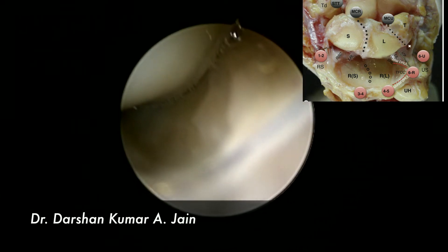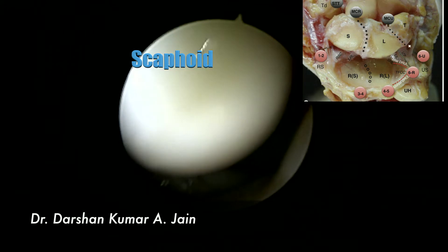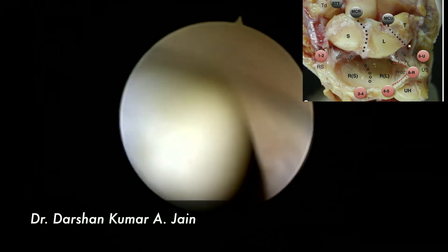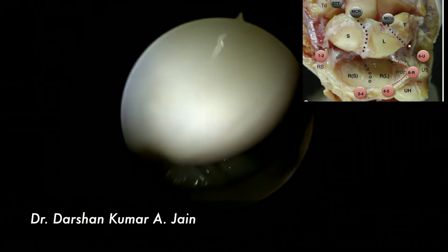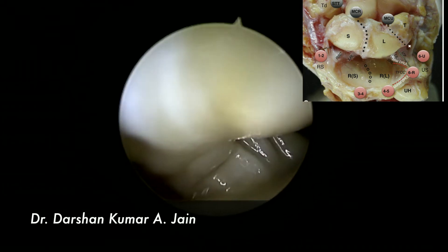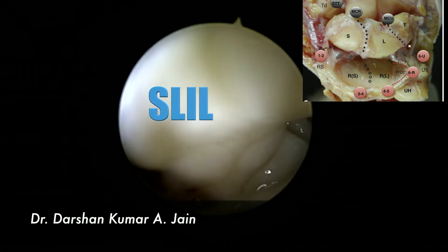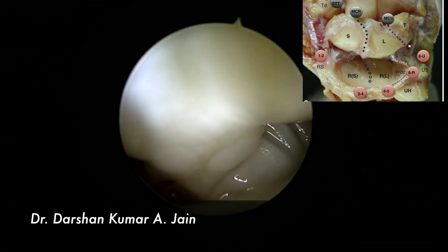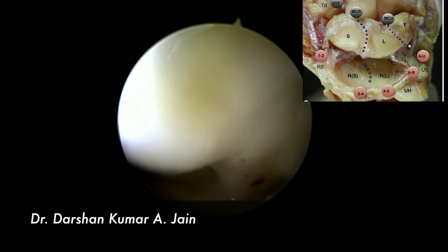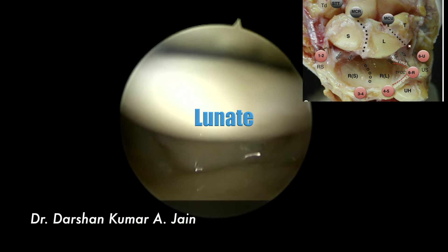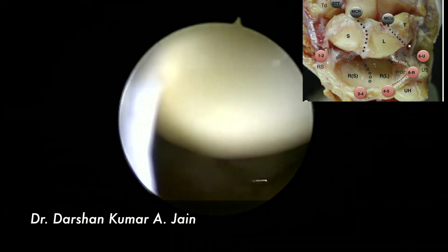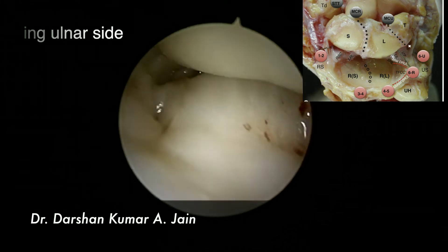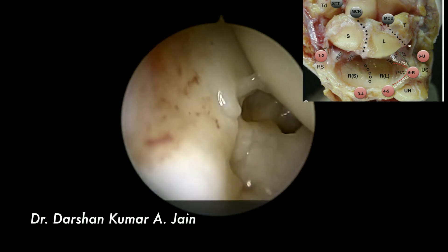You can see the proximal pole of the scaphoid, tracing towards the radial side further. That's the scaphoid-lunate interosseous ligament on the ulnar side of the scaphoid. That's the lunate. Going on the ulnar side, you could identify the dorsal attachment of the TFCC towards the capsule.